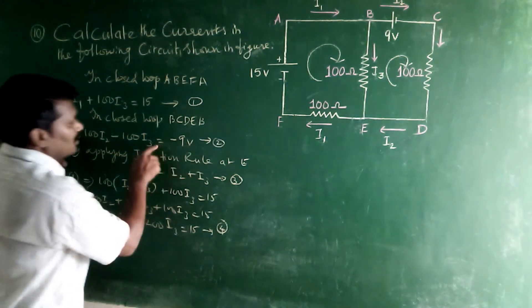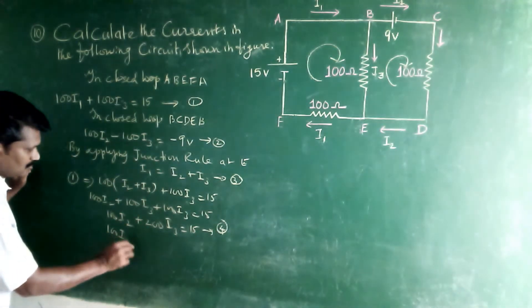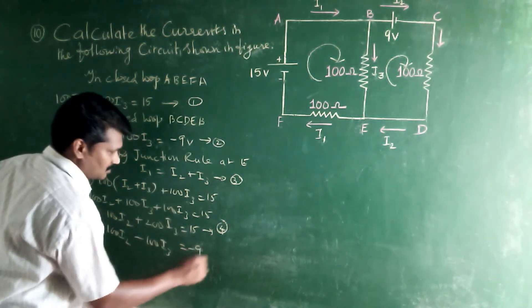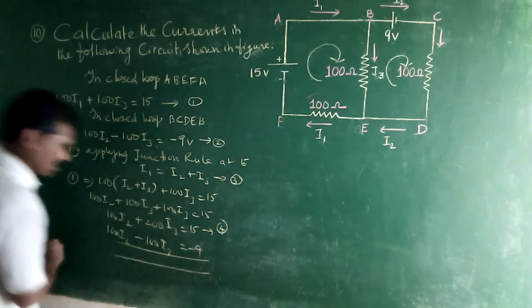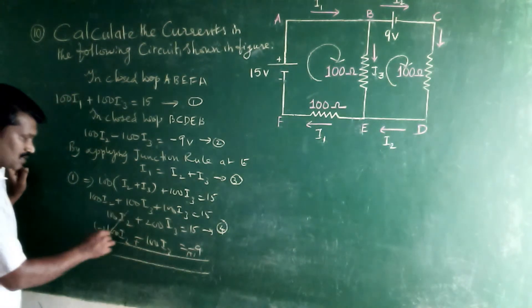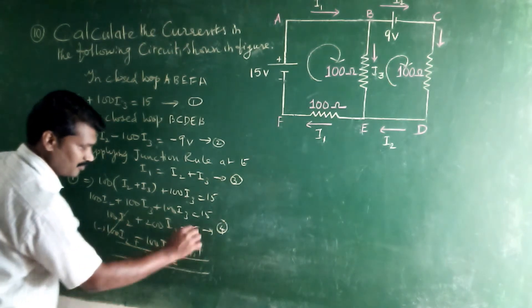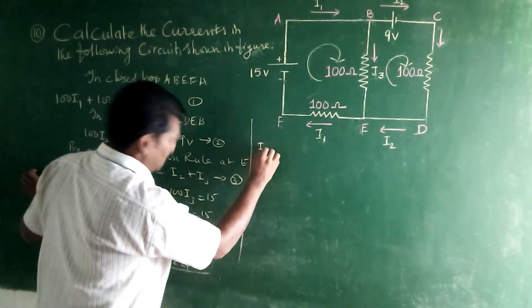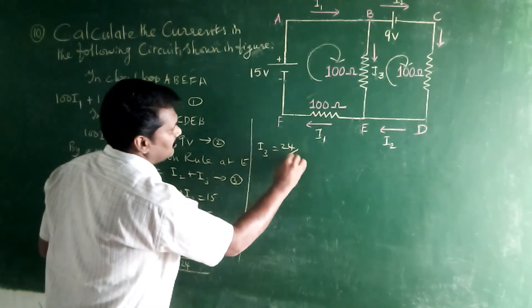Then, the equation number 2 minus equation 4. Minus I2 plus I2 minus I3 is equal to minus 9. Now, minus plus plus. So 100 plus 100, 300 I3 equal to plus 9 is 24.